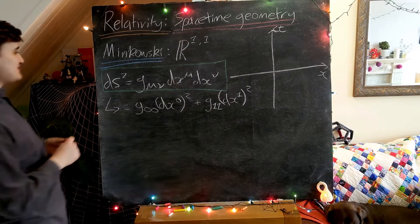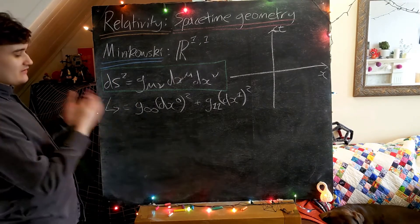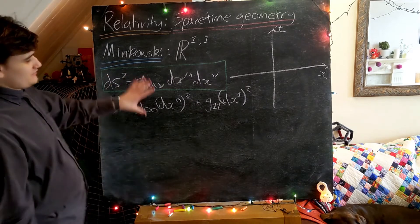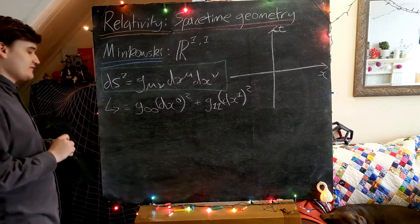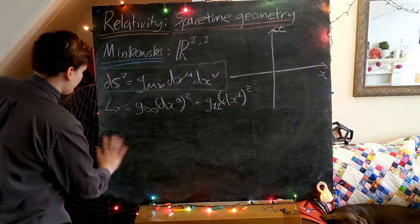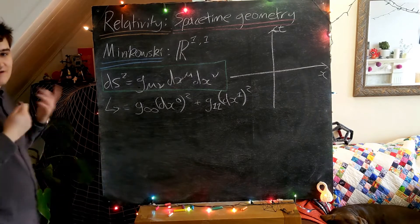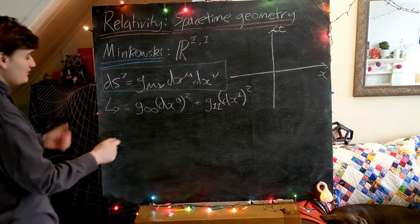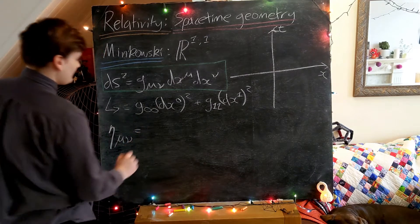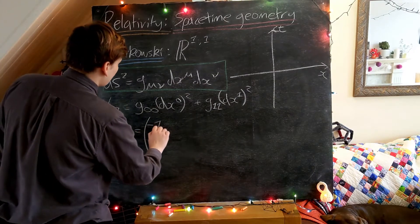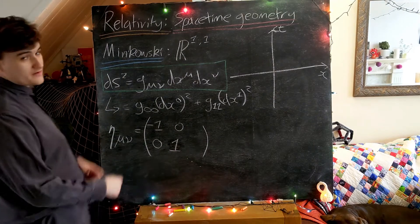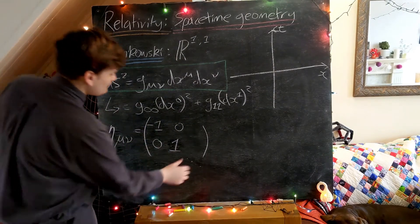As we move to special relativity, things become different in a very distinct way: one of these components becomes negative. Sticking with our two-dimensional space-time, let's now define the Minkowski metric. We don't use G for the Minkowski metric — we give it its own symbol because it's that special. It's usually referred to as eta. So the Minkowski metric eta-mu-nu is the diagonal matrix with minus one and then one, continuing with ones for any additional space components.